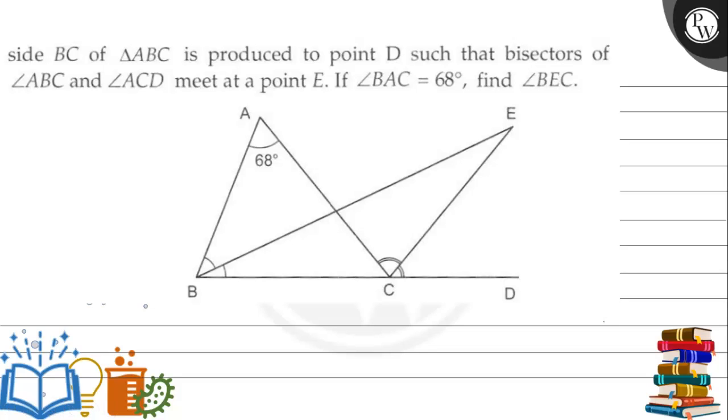Hello, let's read this question. The question says side BC of triangle ABC is produced to the point D such that the bisectors of angle ABC and angle ACD meet at a point E. If angle BAC is equal to 68 degrees, find angle BEC.